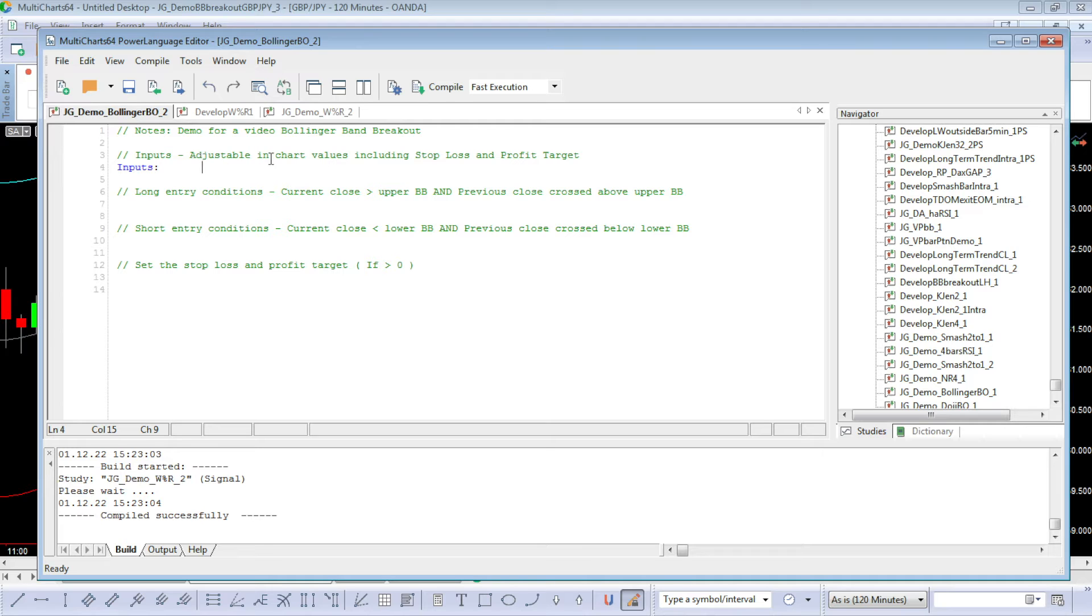I've got adjustable in-chart values including the stop loss and the profit target. Once we get the strategy on the chart we can adjust those easily within the chart settings. We can create these inputs calling them pretty much whatever we want to do. I'm just going to call them my stop and give it a value of zero, and my profit and give it a value of zero. You'll see why I'll give it a value of zero a little later in the code.